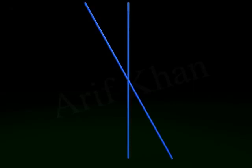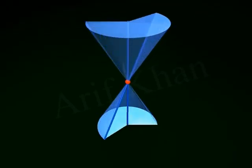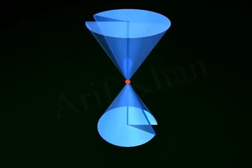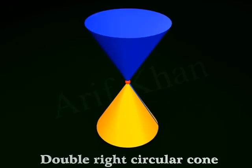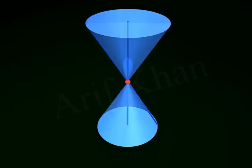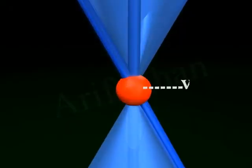When a straight line intersects a vertical line at a fixed point and rotates about that fixed point, the surface obtained is called a double right circular cone. A double right circular cone consists of two cones joined at a fixed point called the vertex.